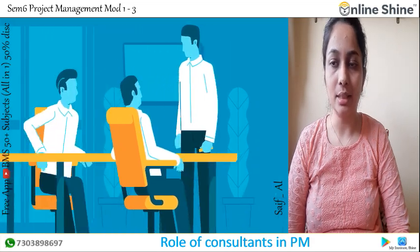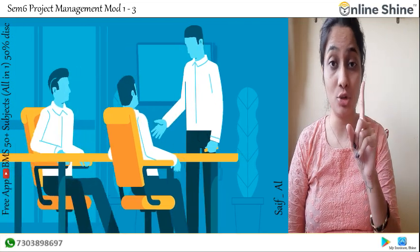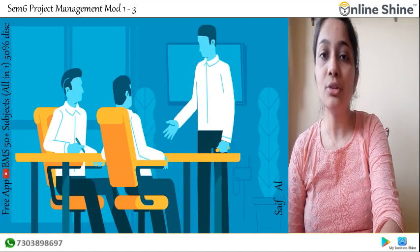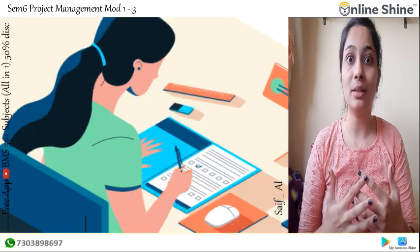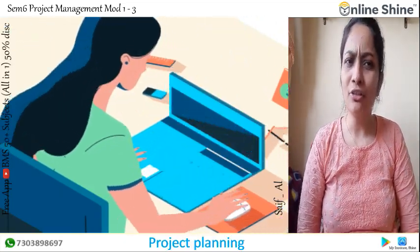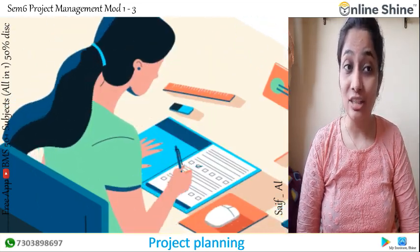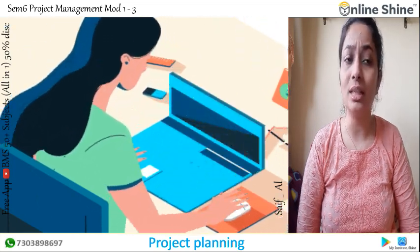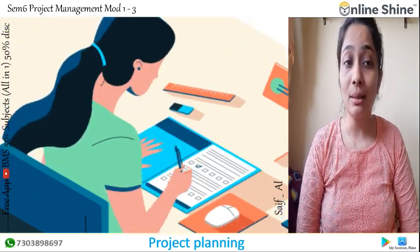Moving to Chapter 5, which is the last chapter of Unit 1 — Project Plan. Project planning is a part of project management which relates to the use of schedules such as Gantt charts to plan and subsequently report progress within the project environment.